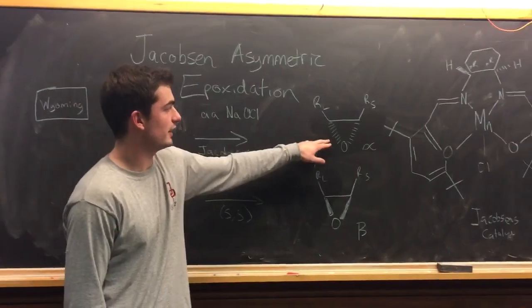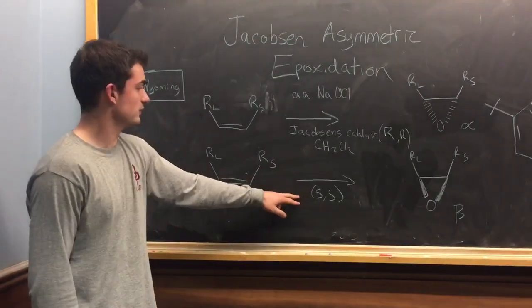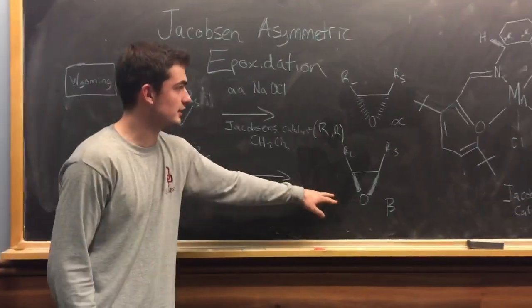it will give you the alpha product or the epoxide on the alpha side. And if you have the SS version, it will give you the epoxide on the beta side.